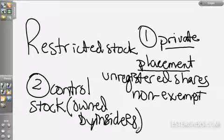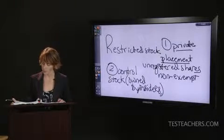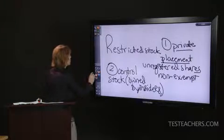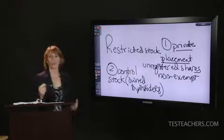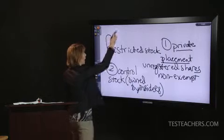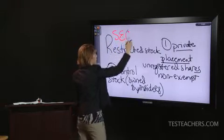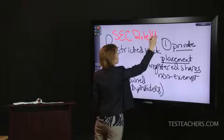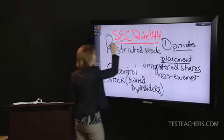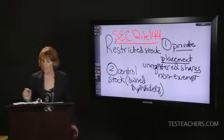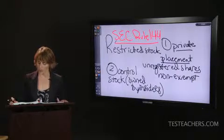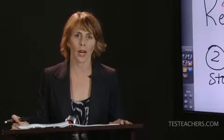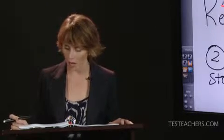So there are two types of restricted stock. Because these aren't freely saleable, we must follow an SEC rule to sell these shares. It's called Rule 144 — SEC Rule 144. It sets forth the holding period requirements and the method of sale requirements for restricted stock.